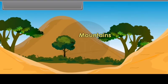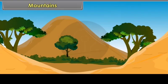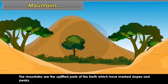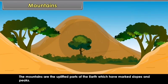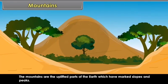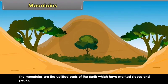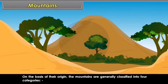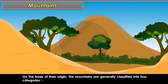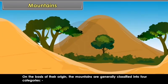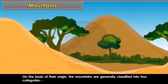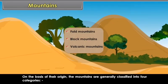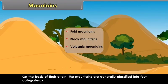Mountains are the uplifted parts of the earth which have marked slopes and peaks. On the basis of their origin, the mountains are generally classified into four categories: fold mountains, block mountains, and volcanic mountains.